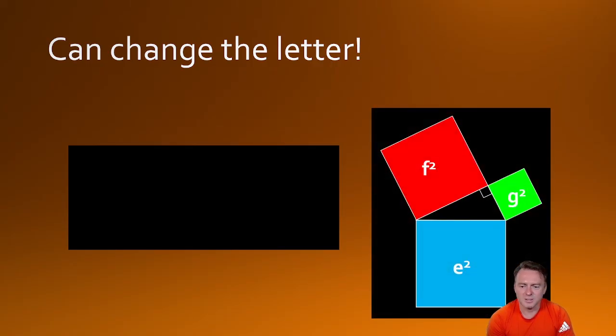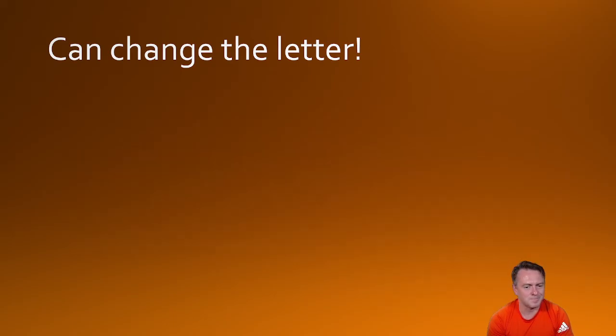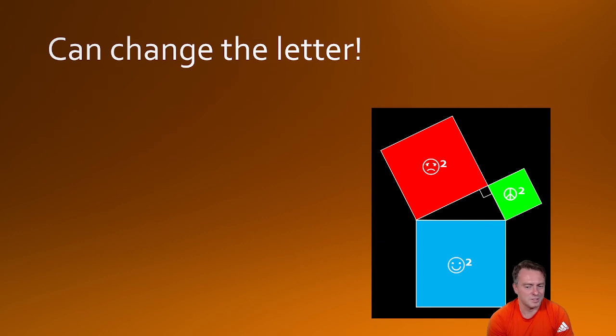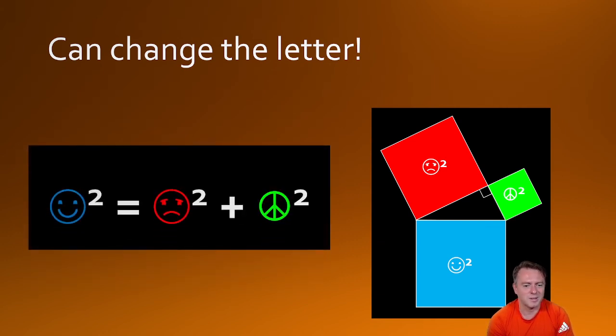You can then also change it around. So say you had a triangle with the label EFG, you could then say it's e squared is equal to s squared plus g squared. Similarly, if we just use symbols, it doesn't really matter. We could say in this case, smiley face squared is equal to frowny face squared plus p sin squared.